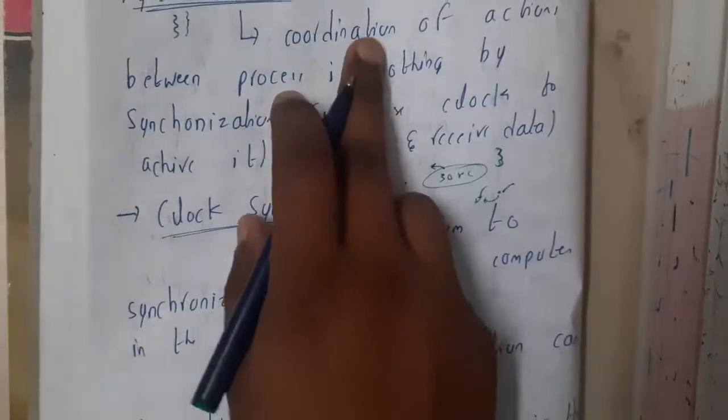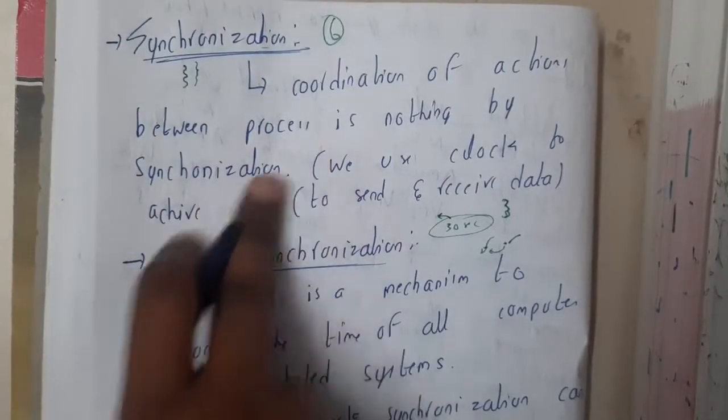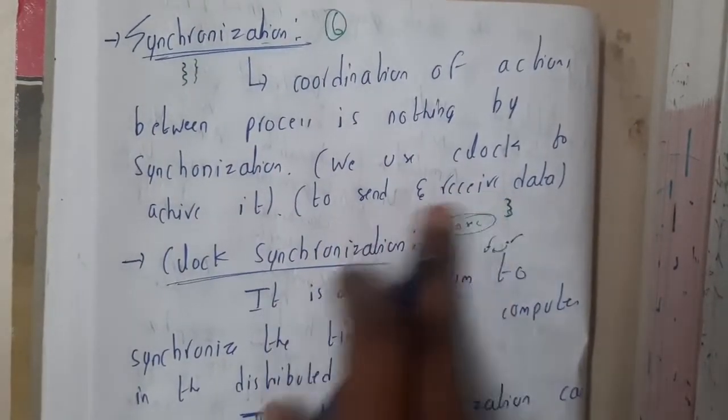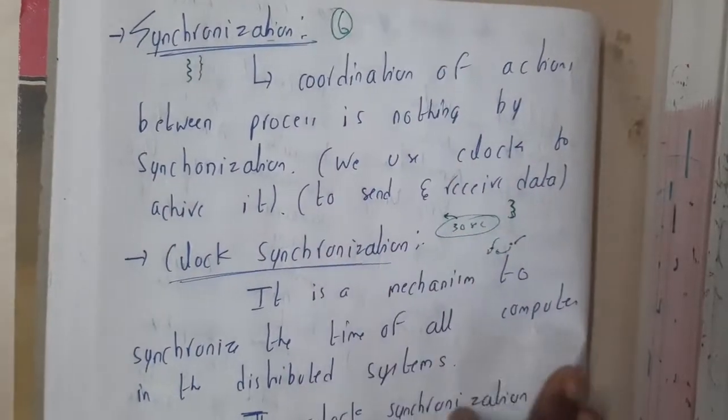Coordination of actions between processes is synchronization. We use a clock to achieve this to send and receive data.